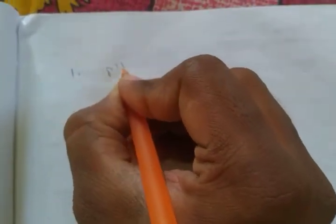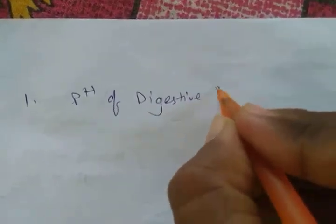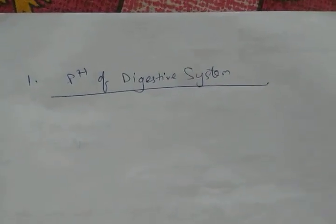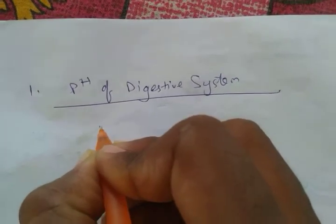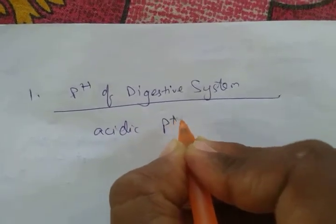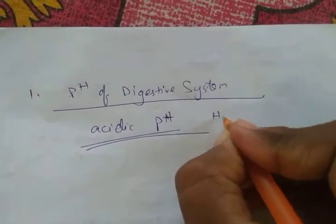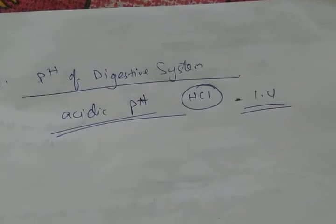The pH of our digestive system is very important. Our digestive system has an acidic pH because our stomach produces hydrochloric acid (HCl), so the pH is around 1.4.